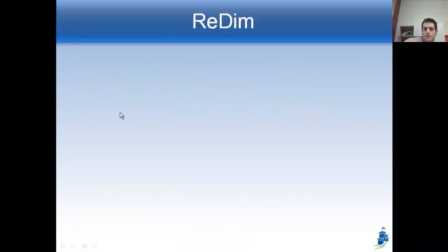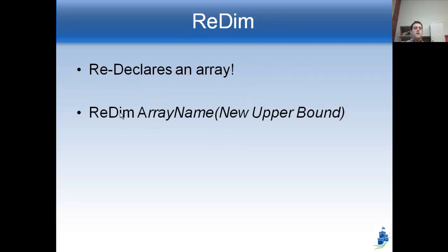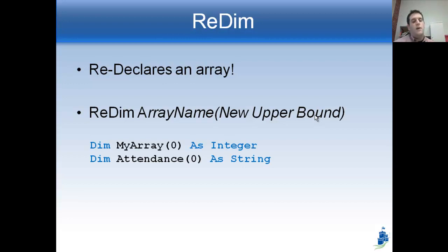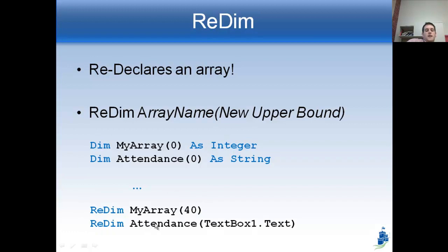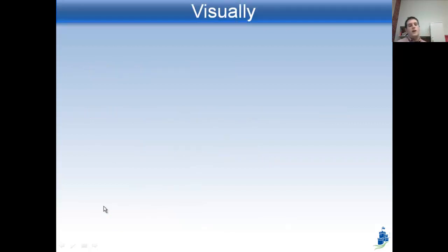To resize the array, we're going to use a command called ReDim, which sort of redeclares an array. We use it like this: ReDim, then the array name, then in parentheses its new upper bound — its new highest index. So I can say Dim MyArray(0) As Integer, let a bunch of code happen, and then somewhere in a subroutine say ReDim MyArray(40), and that changes the size of the array. Before it only had the zeroth element; after ReDim MyArray(40), now it has elements zero to 40 — 41 elements. Or I can use a text box: if I put 10 in the text box, ReDim Attendance(TextBox1.Text) gives it 11 elements, zero to 10. ReDim is awesome — it helps us change the size of an array.